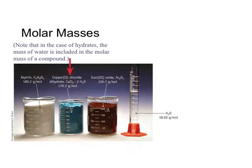Here are just some molar masses of other compounds. I'd encourage you to add those up and make sure that you're able to get the right answers. You will note that in the case of hydrates, the molar mass of water is incorporated into the molar mass of that whole compound. In other words, the 170.5 listed here includes the molar mass of two water molecules.